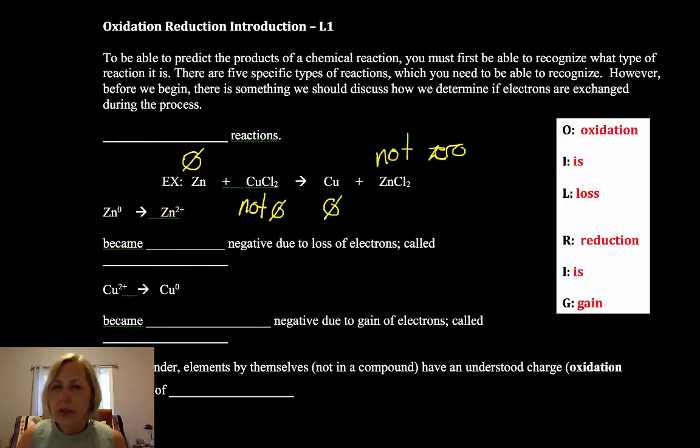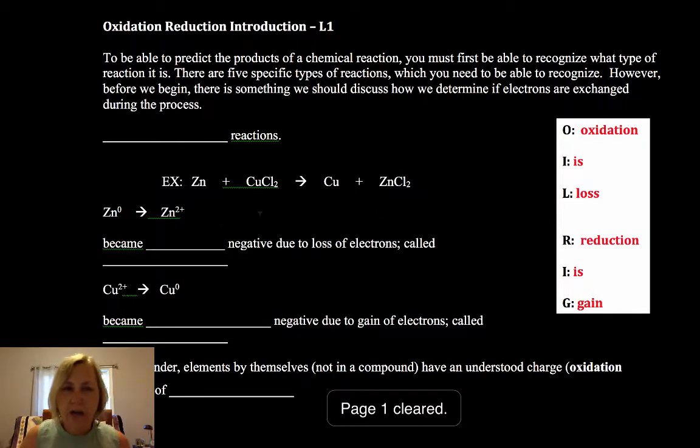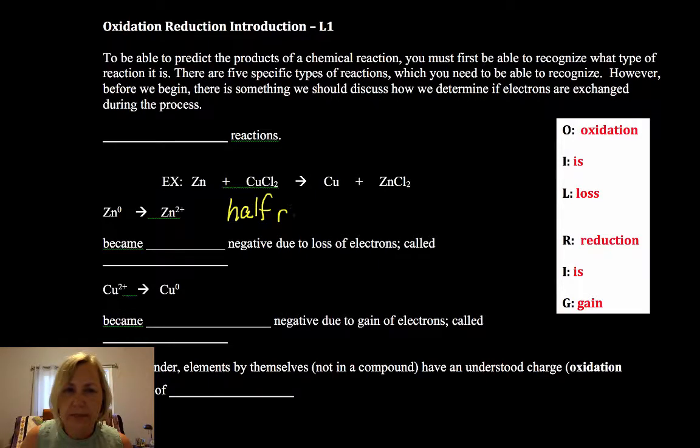Now for upper levels, you're often going to have to write a balanced what we call half reaction. You can't have oxidation without reduction. If something's going to gain electrons, another substance has to lose electrons.